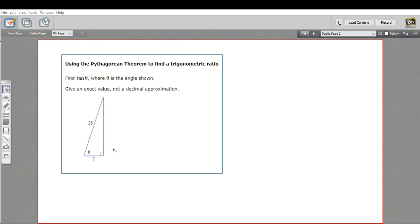In this problem, we're being asked to find the tangent of theta in this diagram, and we have numbers for two of the sides in this right triangle. We don't have the degree angle for theta here. So how can we figure out this problem?